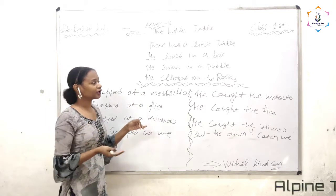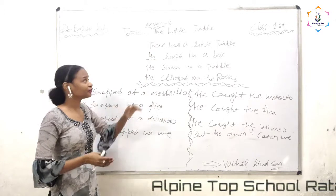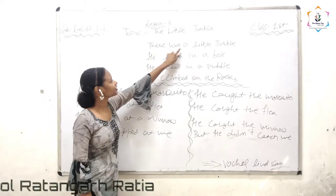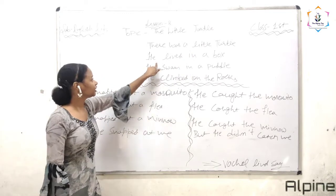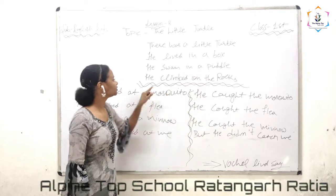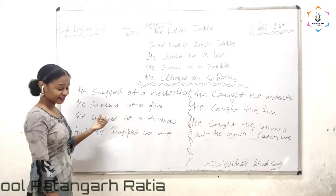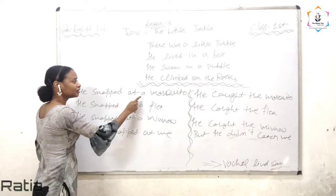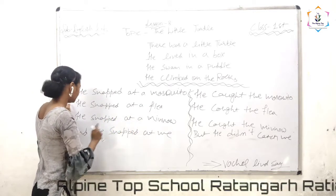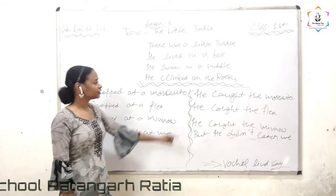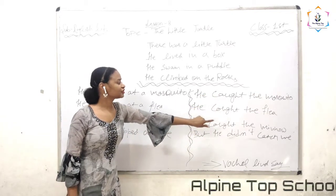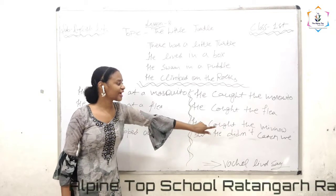Let's start reading the poem. First stanza: There was a little turtle, he lived in a box, he swam in a puddle, he climbed on the rocks. Second stanza: He snapped at a mosquito, he snapped at a flea, he snapped at a minnow, and he snapped at me. Third stanza: He caught the mosquito, he caught the flea, he caught the minnow, but he did not catch me.